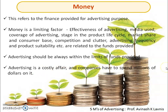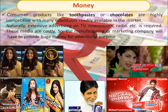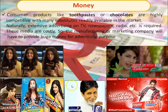Advertising is a very costly affair and companies have to spend a lot of money on it. For consumer products like toothpaste or chocolate, which are highly competitive with many substitutes readily available in the market, a lot of advertising has to be done on TV, newspaper, and radio — all of which are very costly. I have used the same example of toothpaste and chocolate throughout this presentation. Toothpaste and chocolate advertisements use high-paid celebrities because of the intense market competition, making money a very important aspect.